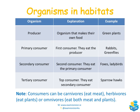The producer is the organism that makes its own food — an example being green plants. The primary consumer is the first consumer; it eats the producer. Examples include rabbits and greenflies, which eat green plants. The secondary consumer eats the primary consumer — examples include foxes eating rabbits, or ladybirds eating greenflies. The tertiary consumer is generally the top consumer and eats the secondary consumer — an example being the sparrowhawk.